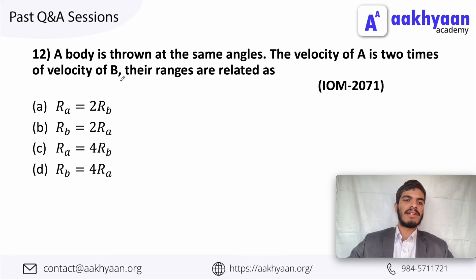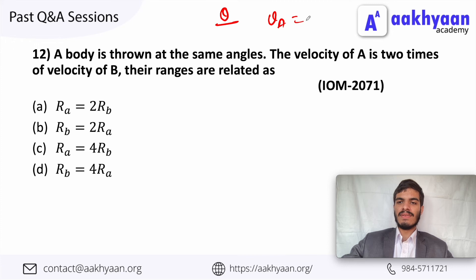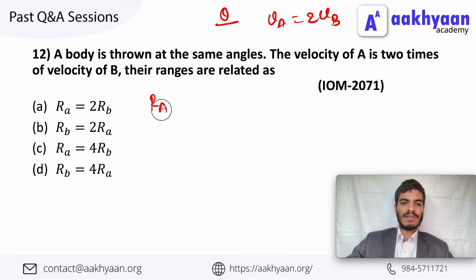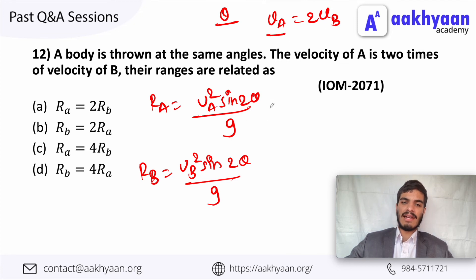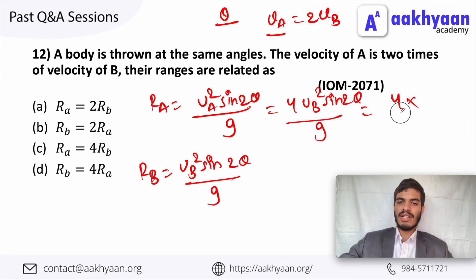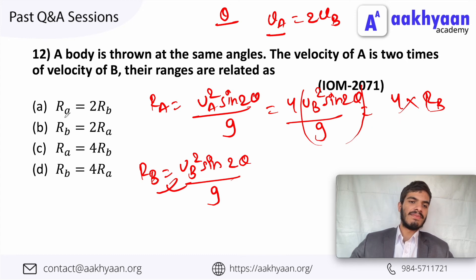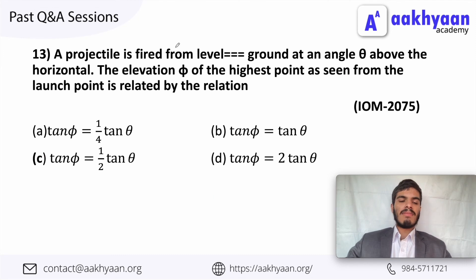In the next problem, two bodies are thrown at the same angle and the velocity of A is 2 times the velocity of B. Their ranges: R_A equals u_A squared sin 2theta divided by g, and R_B equals u_B squared sin 2theta divided by g. Since u_A equals 2u_B, R_A equals 4u_B squared sin 2theta divided by g equals 4 R_B. So R_A equals 4 R_B and C is the correct option.